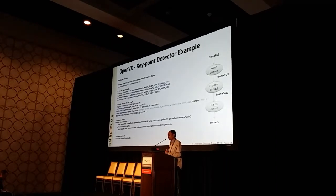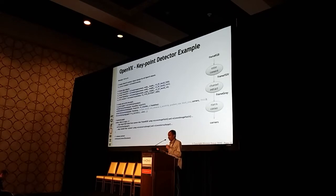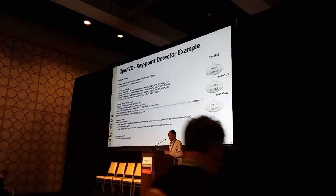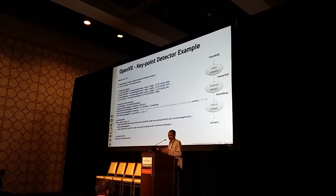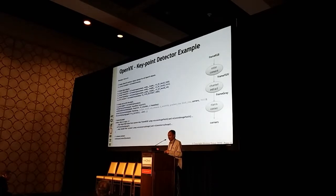It uses the functions called VX access patch and commit patch. When you do an access patch, you get a pointer in the host memory space, and the image can be copied from the RGB image into the host. Then when you say commit patch, you're giving control back to the host. Underneath, the framework will take care of copying the buffers to where the underlying hardware can access the data.